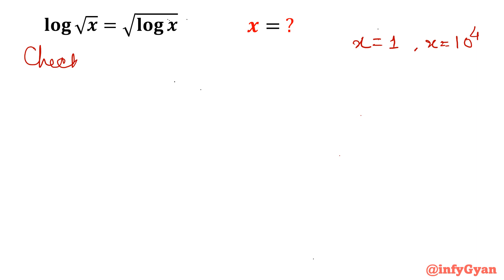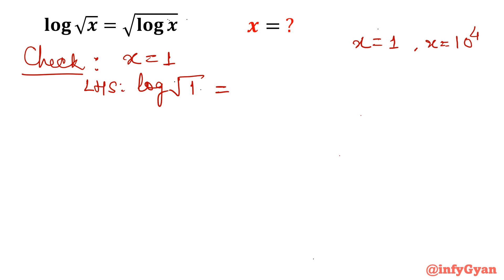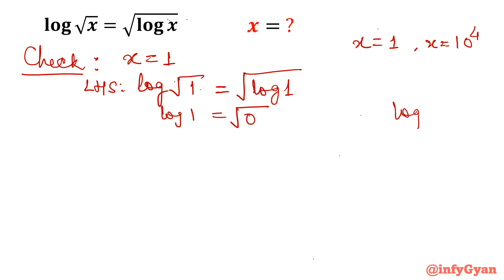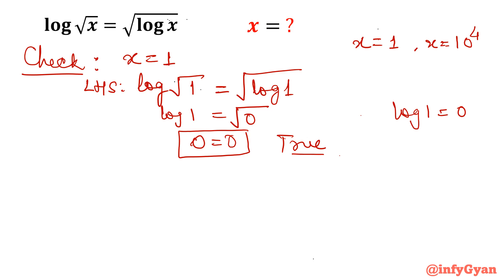Let us verify. For x equals 1: the left hand side becomes log of root 1, which is log of 1, and the right hand side is square root of log 1. Log 1 is 0, so we get 0 equals 0, which is true. So x equals 1 is a valid solution.